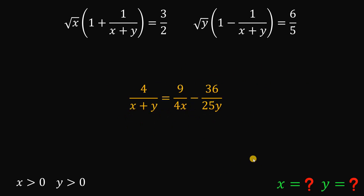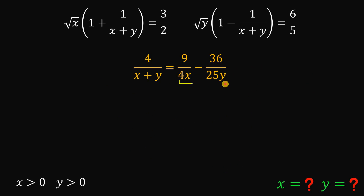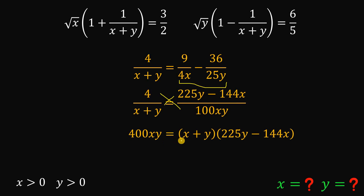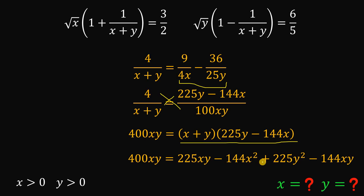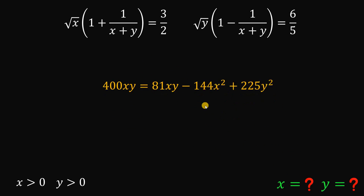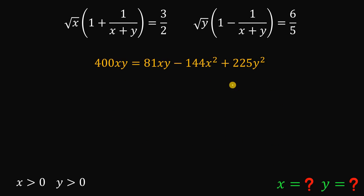Now let's focus on this result. We combine the two fractions on the right-hand side, giving us (225y minus 144x) over 100xy. Then we cross-multiply: 400xy times (x plus y) equals (225y minus 144x). Expanding gives 225xy minus 144x squared plus 225y squared minus 144xy. We combine like terms 225xy and negative 144xy to get 81xy.